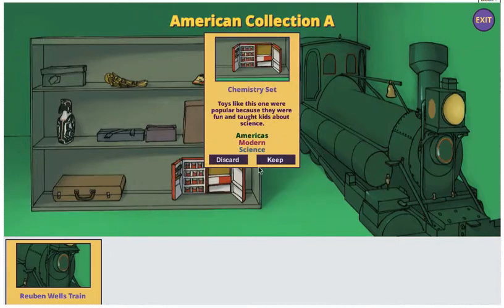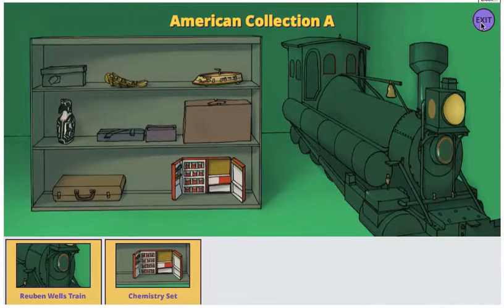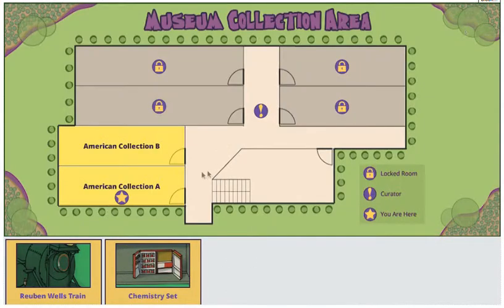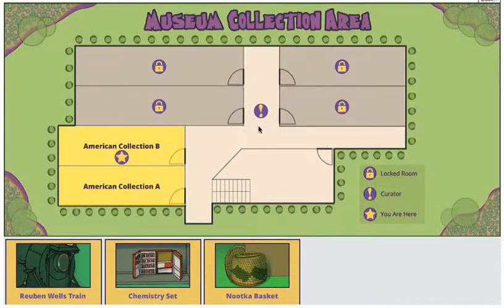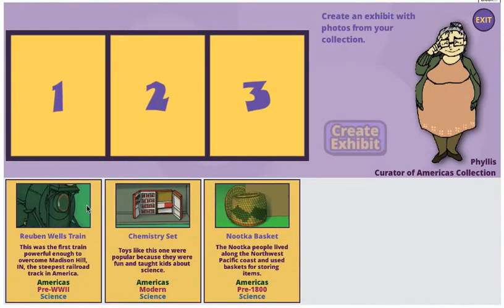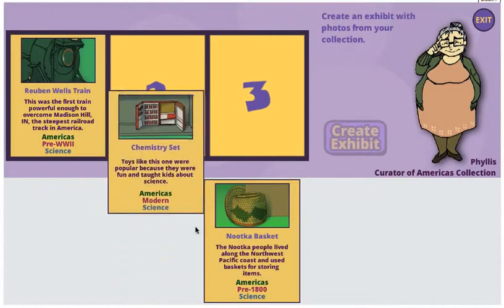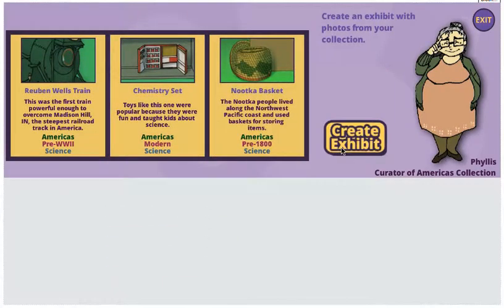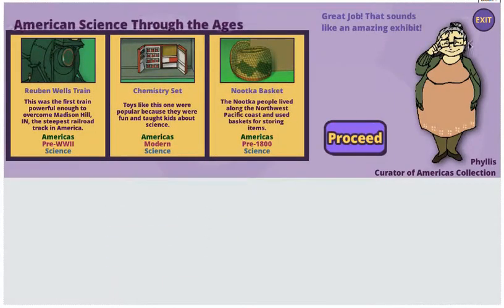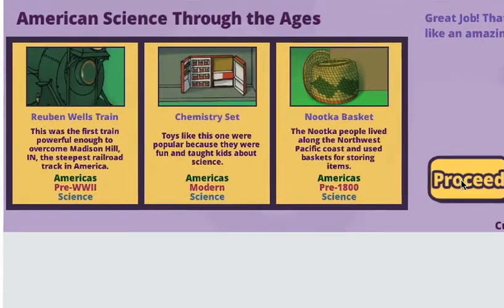In order to unlock new rooms and items, the player must help the curator choose items for an exhibit. A good exhibit — one the curator will accept — contains three items wherein each category is either all the same or all different, with at least one category that is the same amongst all the items.